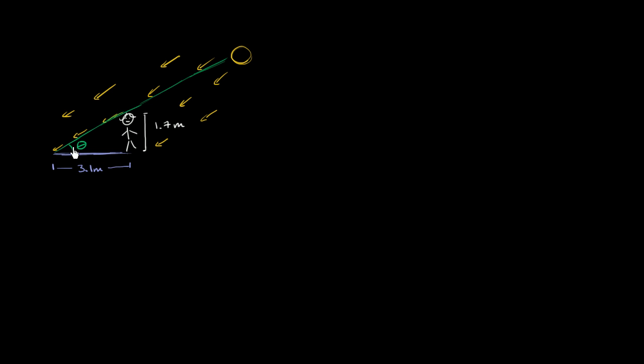and the adjacent? Well, we could remind ourselves with SOHCAHTOA. Sine is opposite over hypotenuse. Cosine is adjacent over hypotenuse. And tangent is opposite over adjacent. So tangent is what we would use - it's dealing with opposite and adjacent.